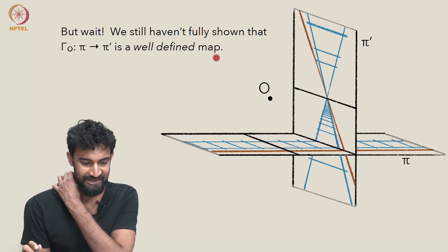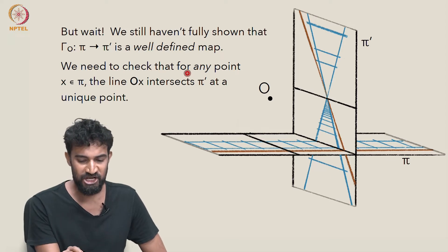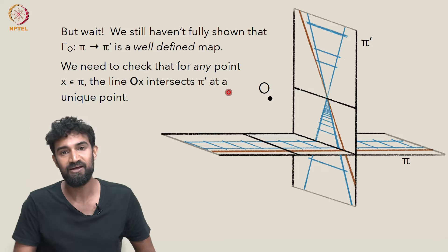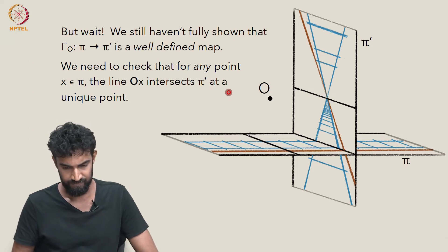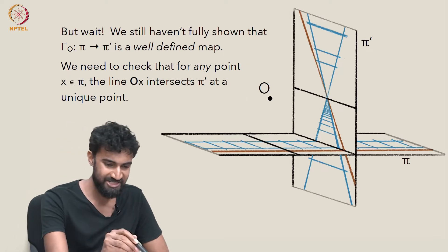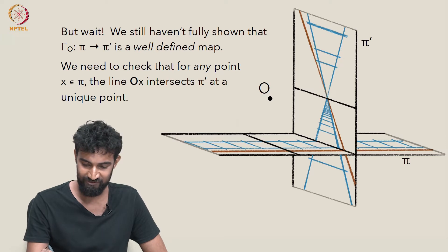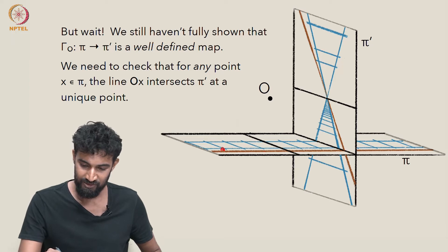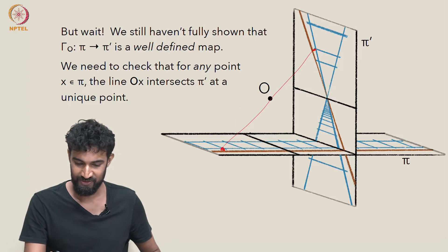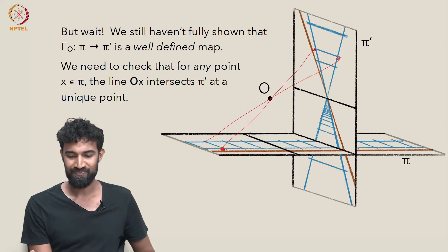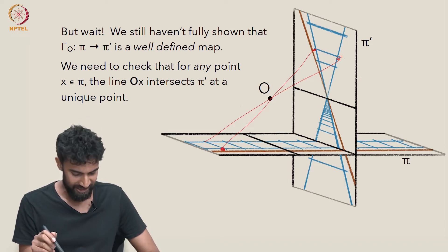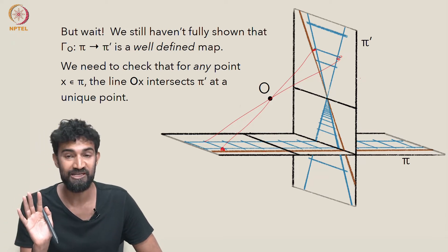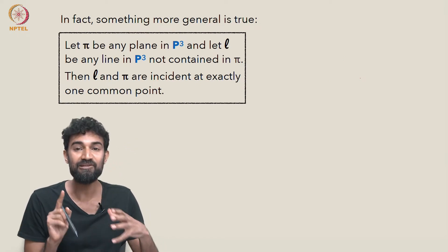We haven't shown that this is a well defined map. To do that, we need to check that for any point x in pi, the line through O intersects pi prime at a unique point. It looks like for any point in pi, we seem to get a unique point in pi prime where the line through O intersects pi prime. But we're working in P3, so we have to be a little careful about all the points at infinity.